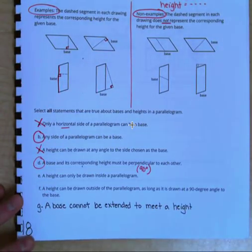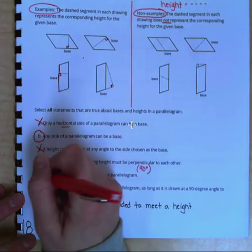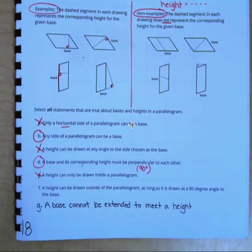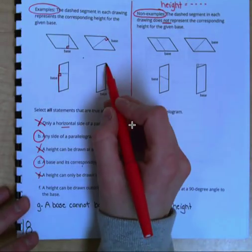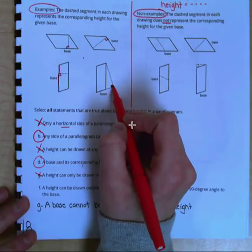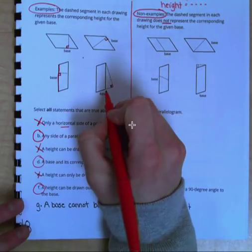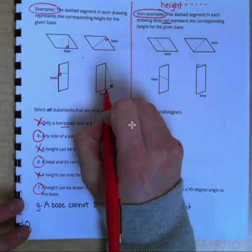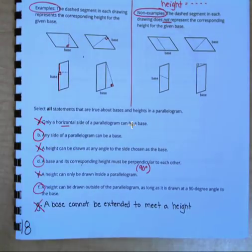E: a height can only be drawn inside a parallelogram. Well, right here we have the height drawn on the outside, so E is false. F says a height can be drawn outside of the parallelogram as long as it is drawn at a 90-degree angle to the base. It is drawn on the outside, it still meets our 90-degree angle requirement, so F is true. And G says that a base cannot be extended to meet a height. We can see right here it's okay if we draw the height on the outside of the parallelogram. We will have to extend our base out a little bit to meet it, so G is false. Hopefully those went okay for you.